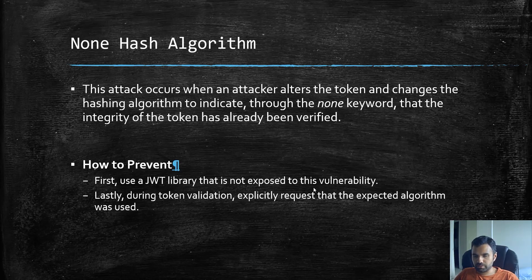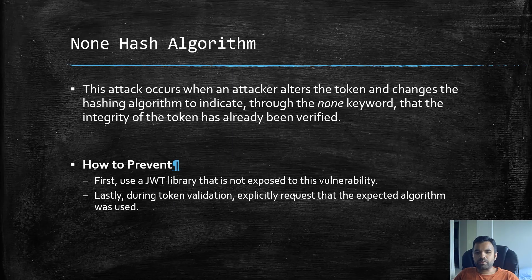To prevent it: first, use a JWT library that is not exposed to this vulnerability — a few rare, old libraries are still vulnerable, so do your due diligence. During token validation, explicitly require that the expected algorithm was used, rather than allowing users to choose the algorithm or accepting anything.